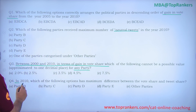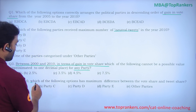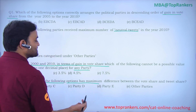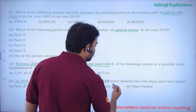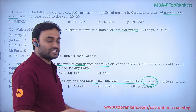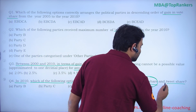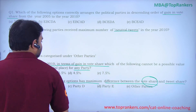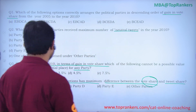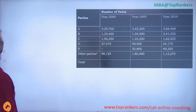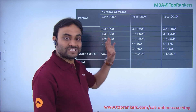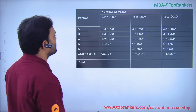The fourth question asks: in 2010, which option has the maximum difference between vote share and tweet share? For this we need to find the total number of tweets and then the percentage value for each party. So let's focus on the table — we need to find the percentage values, and for that we first need to add all the vote totals.